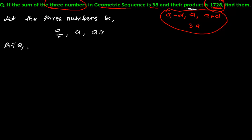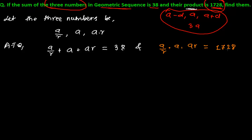According to the question, the sum gives us: a/r + a + a·r = 38. And the product gives us: (a/r) · a · (a·r) = 1728. Now, the r in the denominator and the r in the numerator cancel out, and we get a³ = 1728.